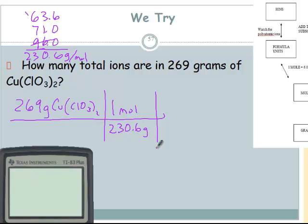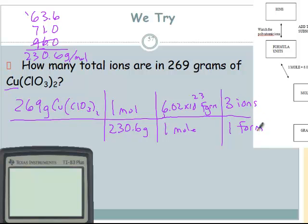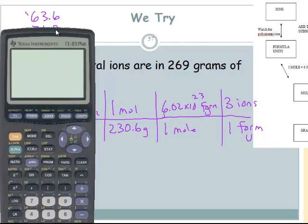All right, so now I have moles, so now I need to know the fundamental particle. It is ionic, so one mole is 6.02 times 10 to the 23rd formula units. And then the last conversion, that's what we just did on the last slide, which is I have one copper and I have two chlorates, the polyatomic ions, so this is three ions total in that one formula unit of copper two chlorate. So there's the setup and you can do the math to finish that one.